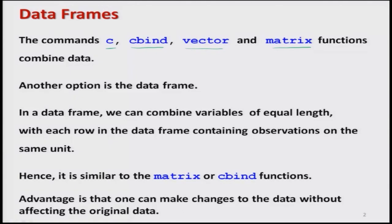We have learned earlier about the commands C, cbind, vector, and matrix — these are the popular functions that help us in combining data. For example, matrix can combine the data into rows and columns. Similar to these functions, we have another option which is called a data frame.